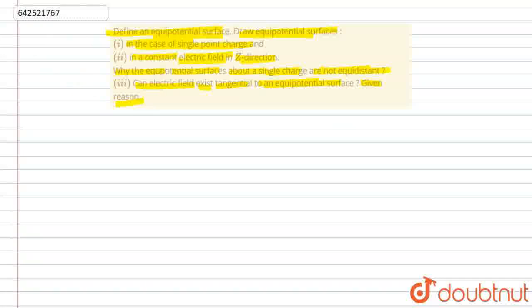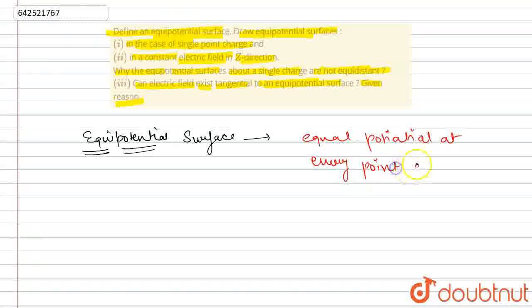So, let's first start with the, what's equal? By its name we can say that it's had equal potential. So, the equipotential surface are the surface which has equal potential at every point on it.